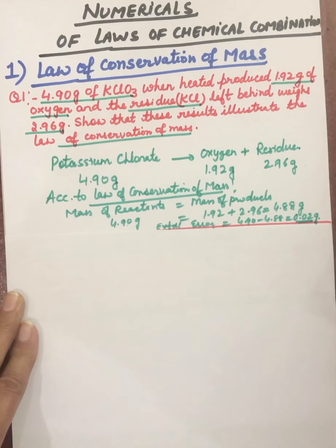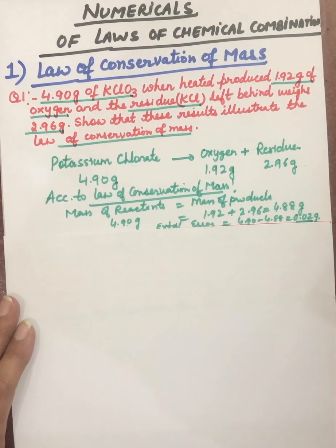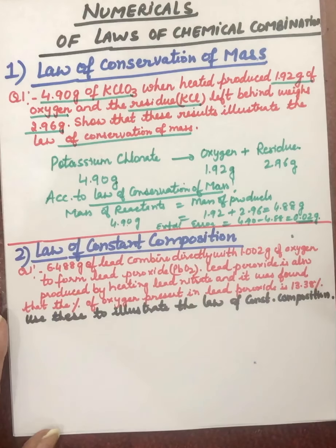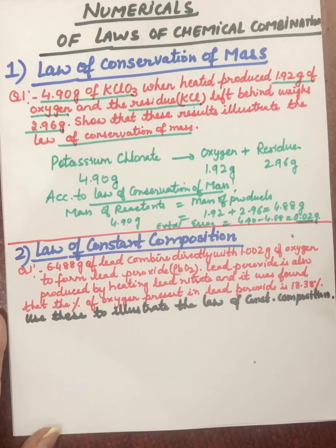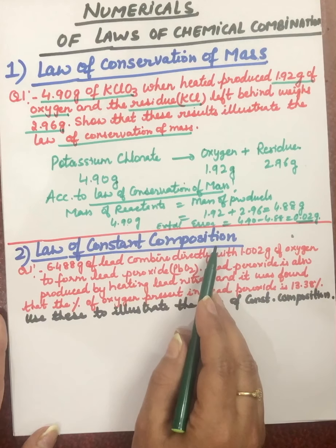So this is the numerical for the law of conservation of mass: just take the mass of reactants and products and see they come out to be equal. There can be a little experimental error, but the law will always be verified. Now we are moving on to the next law, that is the law of constant composition, also known as the law of definite proportion.